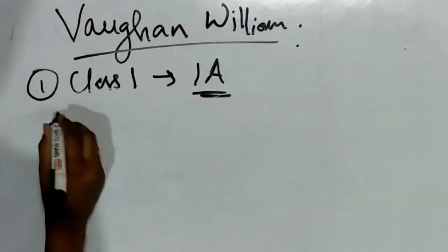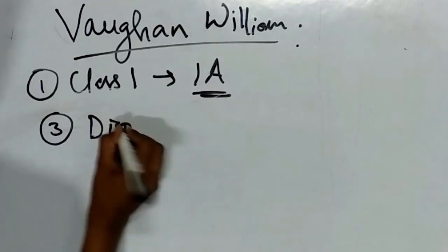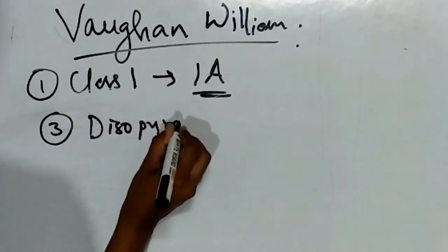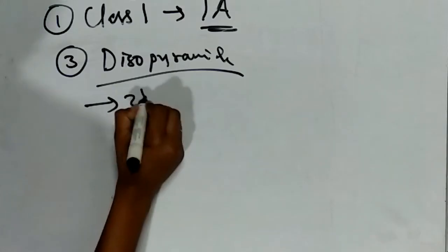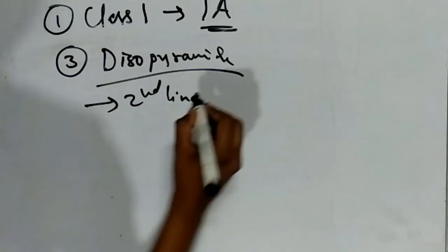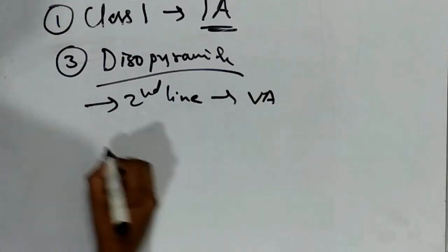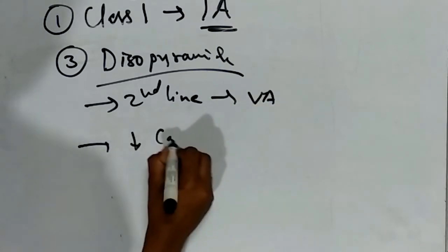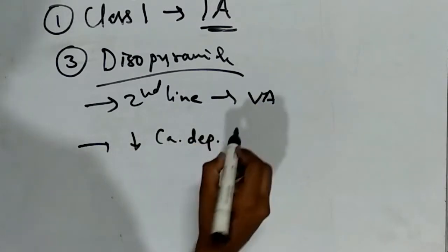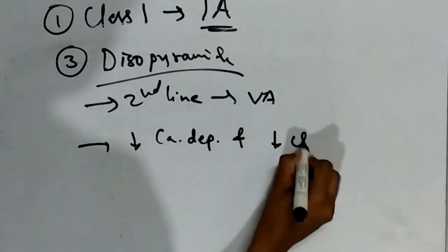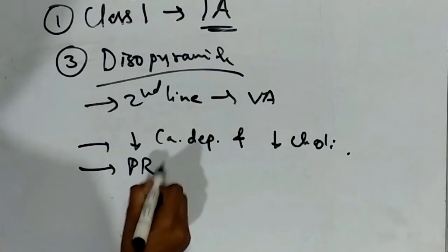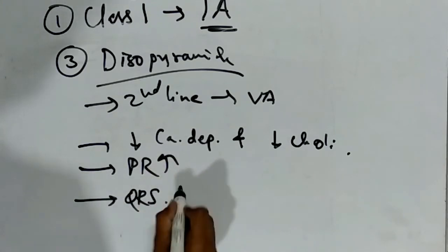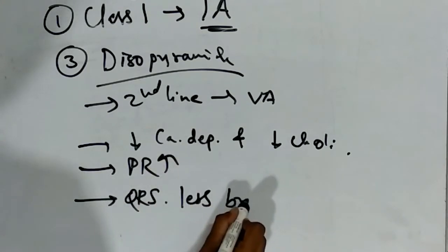The third drug is disopyramide. It is the second line drug for ventricular arrhythmia. It decreases cardiac depression and decreases cholinergic activity. It increases PR and less broadens QRS complex.